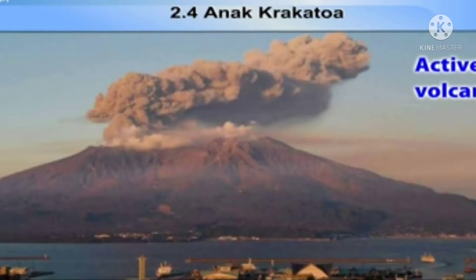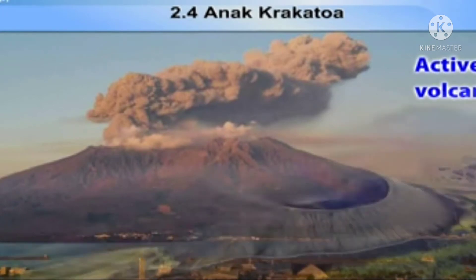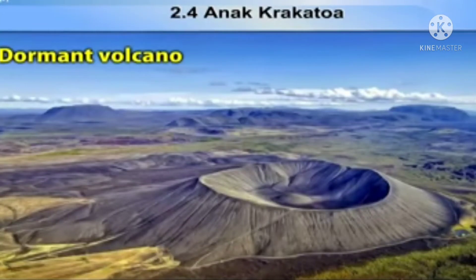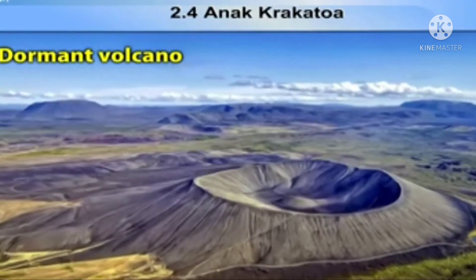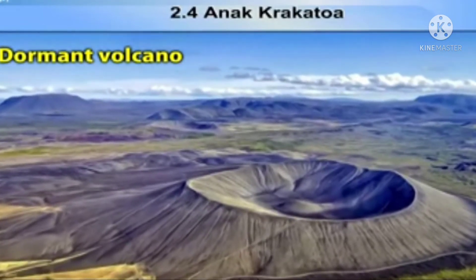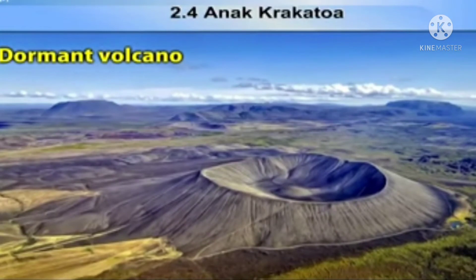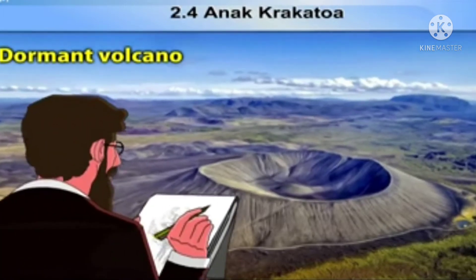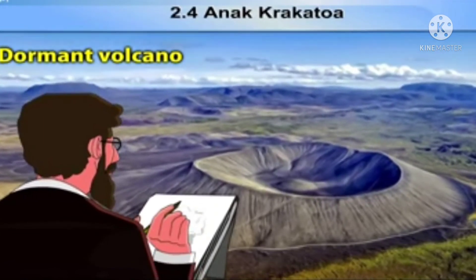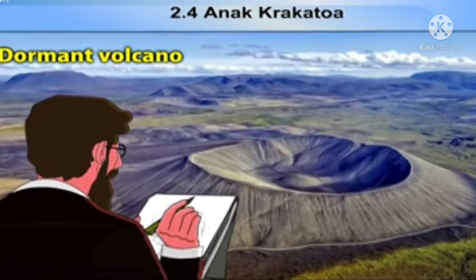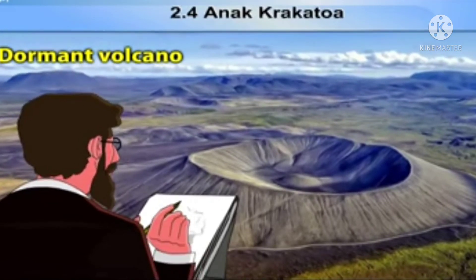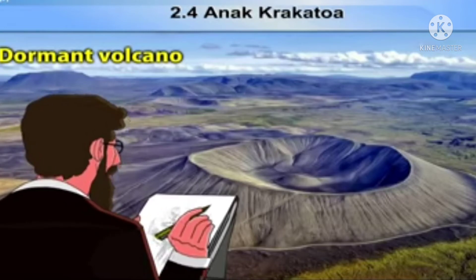Next, dormant volcanoes. Dormant volcanoes are temporarily inactive or in a deep sleep, which means we find information about the eruptions of these volcanoes in history, but now they are quiet. Looking at the picture, you can get an idea that it was a spot of volcanic eruption. But these volcanoes have erupted in history and now there is no evidence of eruption, so they are called dormant volcanoes.